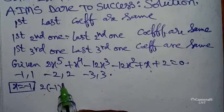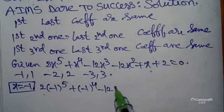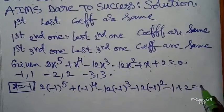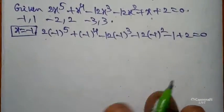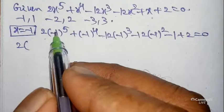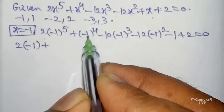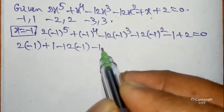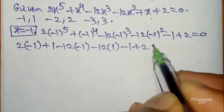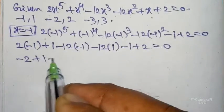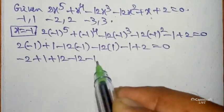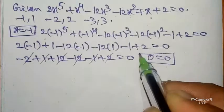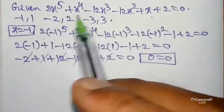We get: 2(-1)⁵ + (-1)⁴ - 12(-1)³ - 12(-1)² + (-1) + 2 = 0. Now: 2 × (-1) = -2 (odd power stays negative); (-1)⁴ = +1; -12 × (-1)³ = +12; -12 × (-1)² = -12; then -1 + 2. So: -2 + 1 + 12 - 12 - 1 + 2 = 0. The -2 and +2 cancel, +1 and -1 cancel, +12 and -12 cancel. Therefore we get 0 = 0.